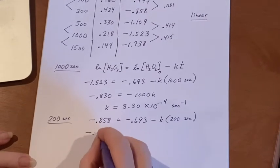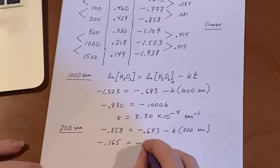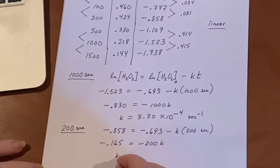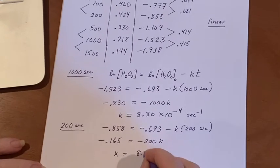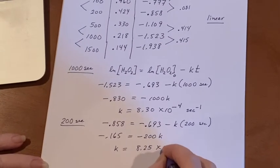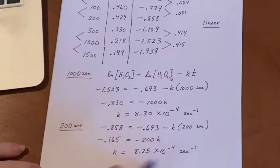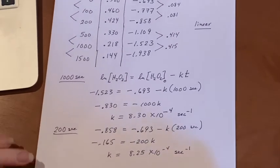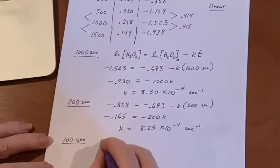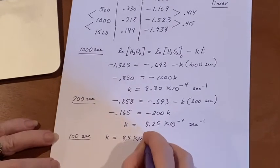Minus 0.165 equals negative 200 times K. K is going to end up being not so much different, 8.25 times 10 to the negative fourth inverse seconds. And if you did this also for 100 seconds, you would see that you got something similar again. At 100 seconds, you would get that K was 8.4 times 10 to the negative fourth inverse seconds.